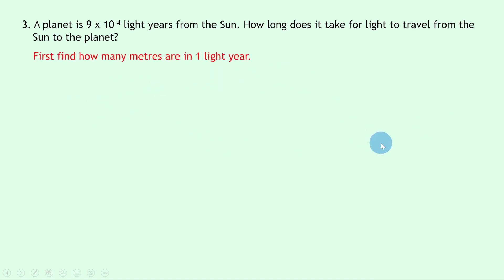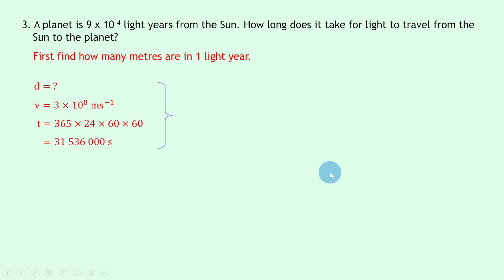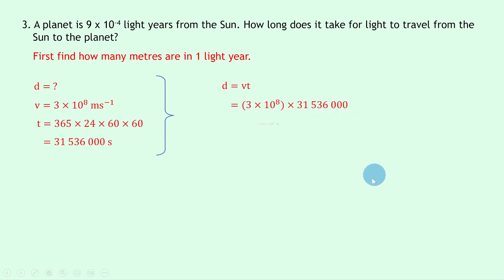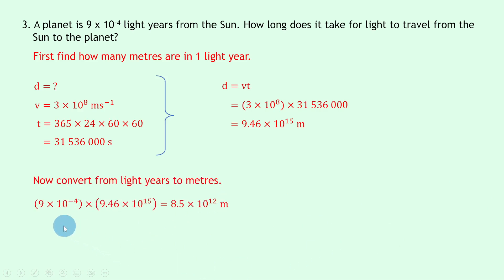So let's find how many meters are in one light year again: d = vt = 3×10⁸ × 31,536,000 = 9.46×10¹⁵ meters — or just remember this value. Now convert from light years to meters: 9×10⁻⁴ × 9.46×10¹⁵. We're multiplying because we're going from light years to meters and want a bigger number, giving a distance of 8.5×10¹² meters.